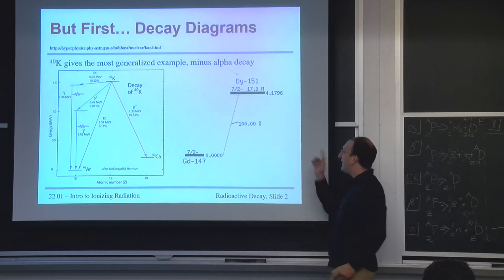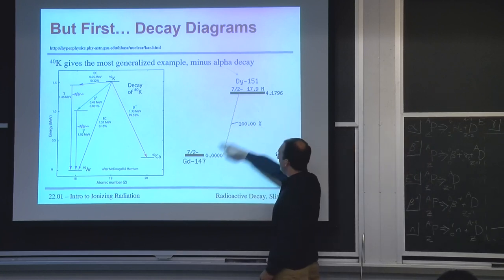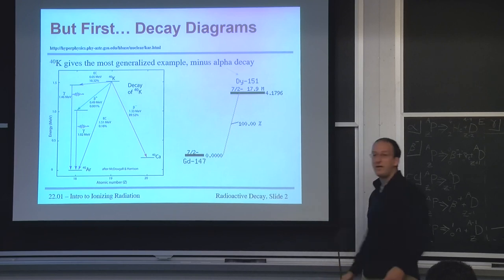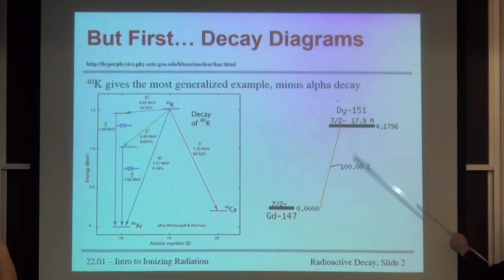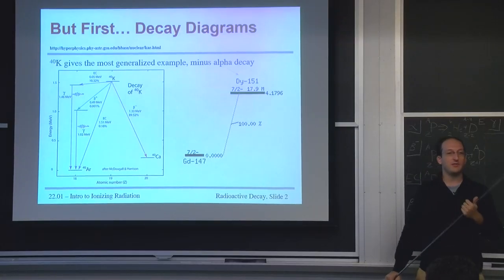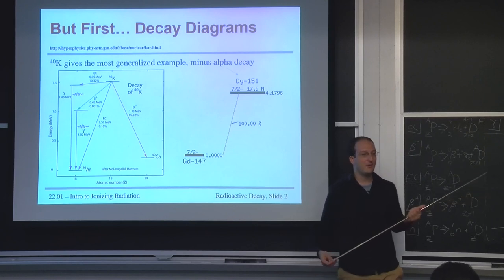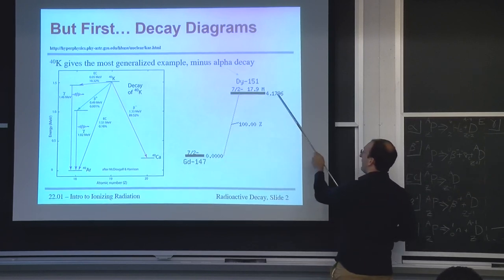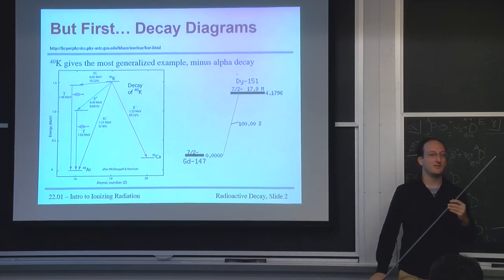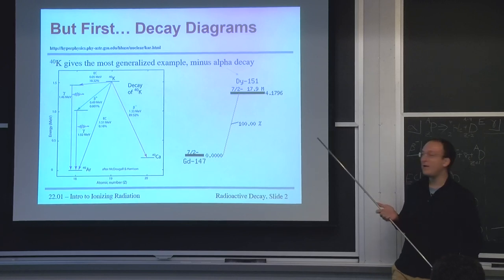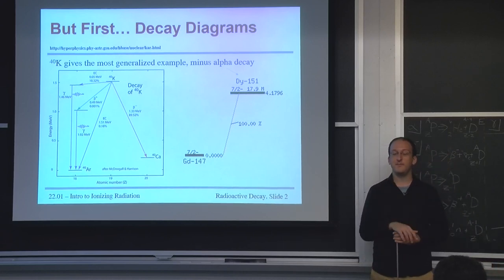This one I like a lot because it gives you almost every possible decay with the exception of alpha decay and spontaneous neutron emission. The only one really missing, I found what I think is the simplest decay diagram ever, dysprosium-151. There's only one thing it can do, is it can decay via alpha decay to its ground state. I want to point out a few of the features of these decay diagrams so you know what to look for.